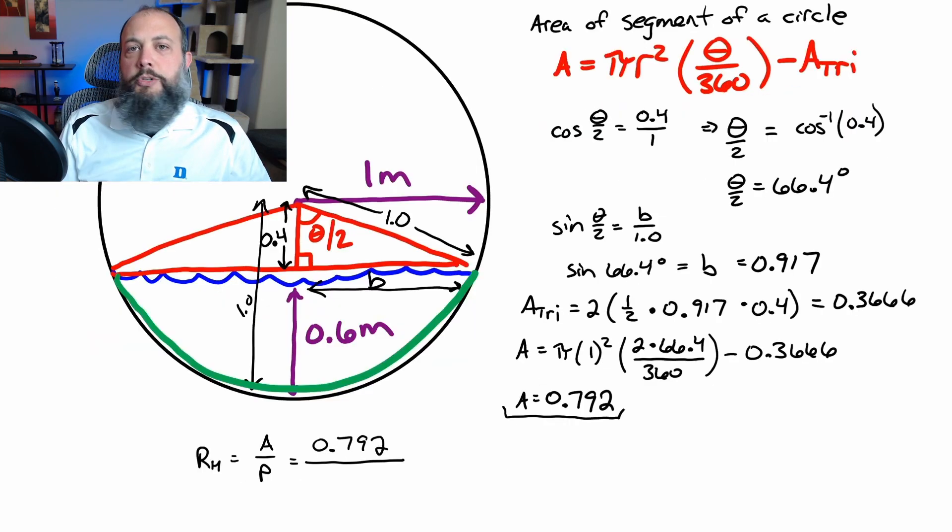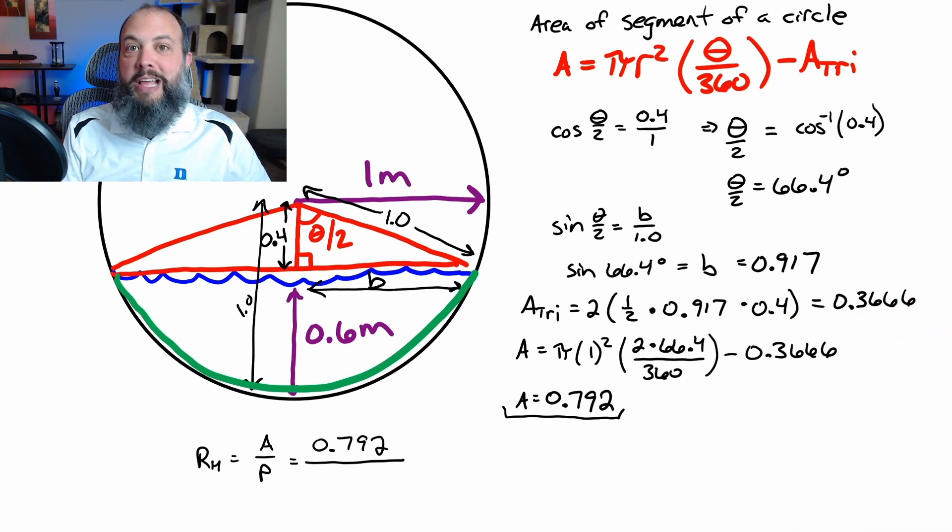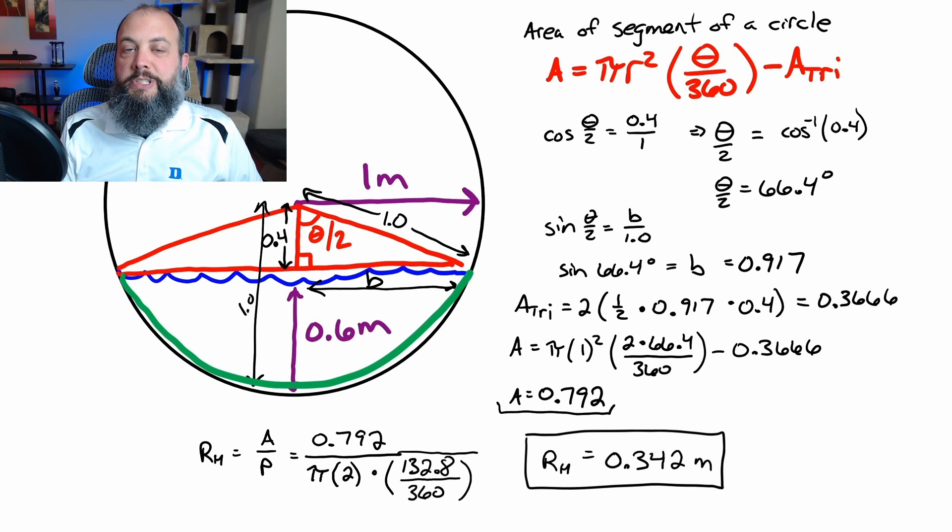So to finish off, hydraulic radius: area divided by wetted perimeter. We've got area. Wetted perimeter is going to be the length of that green line, and similar to the same way we found the area of that red pie wedge as a ratio of the area of the wedge to the area of the whole circle, we'll do the same thing for perimeter. The ratio of that angular arc to the perimeter of the whole circle. The total perimeter of the circle is π times diameter, so radius 1, diameter 2, 2π for the overall perimeter. And then the green portion only represents 132.8 degrees, which is double that angle of the smaller triangle, the 66.4, over 360 degrees for the whole triangle.